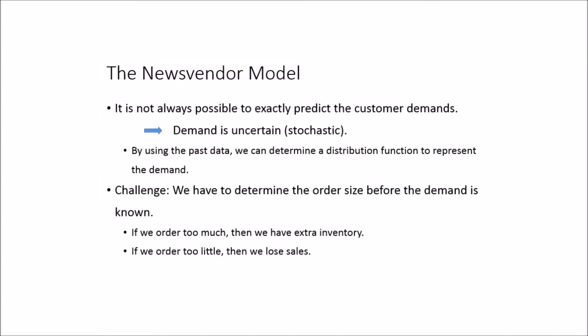In this video we are going to focus on the news vendor problem. In real life it is not always possible to exactly predict customer demands. This means there is uncertainty in demand, which means the demand is stochastic. However, we can determine a distribution function to represent the demand by using past data.